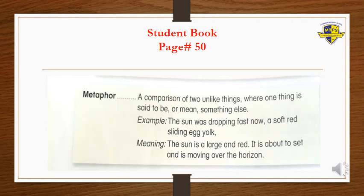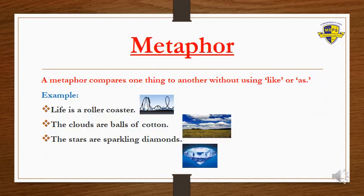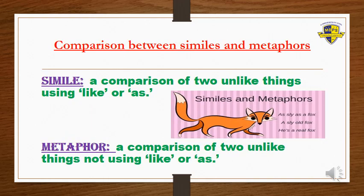A metaphor compares one thing to another without using the words 'like' or 'as.' Instead, they mainly use the words 'is' or 'was.' In the following examples: 'Life is a roller coaster,' 'The clouds are walls of cotton,' and 'The stars are sparkling diamonds.'